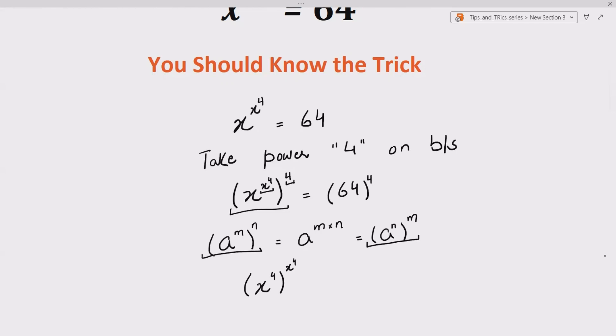We take 4 inside and x raised to the power 4 outside. So this thing equals to 64 which we know can be written as 8 square raised to the power 4.